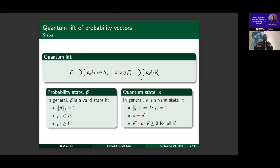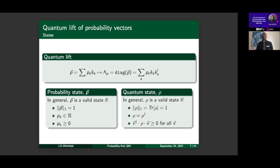To draw the connection between quantum mechanics and probability more tightly, we take this quantum lift and carry over the properties of the probability vector to the quantum matrix version. The probability vector is normalized to one; for the density matrix we take the trace — summing all diagonal elements — and it sums to one. The second property: each entry of the probability vector is real. For the density matrix we get the equivalent condition: ρ = ρ†.